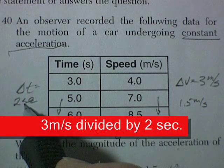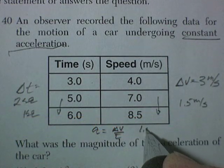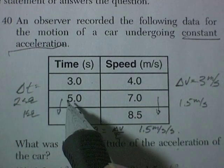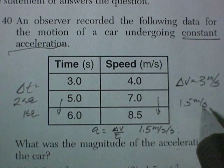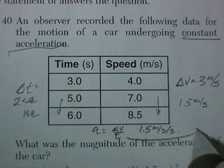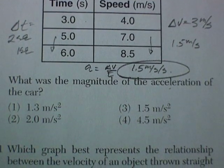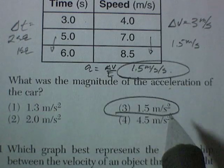If we use this change in velocity of 2 divided by 3 gives us 1.5 meter per second per second. And we come back here and we go 1 second. That's convenient. 1.5 meters per second. That also gives us 1.5 meters per second. What was the magnitude of the acceleration of the car? I'm going to go with 1.5 meter per second squared.